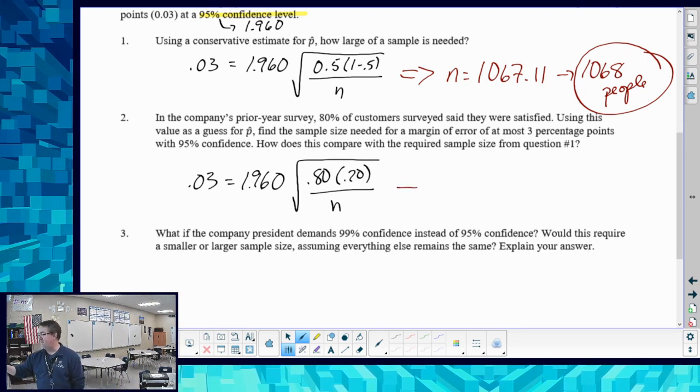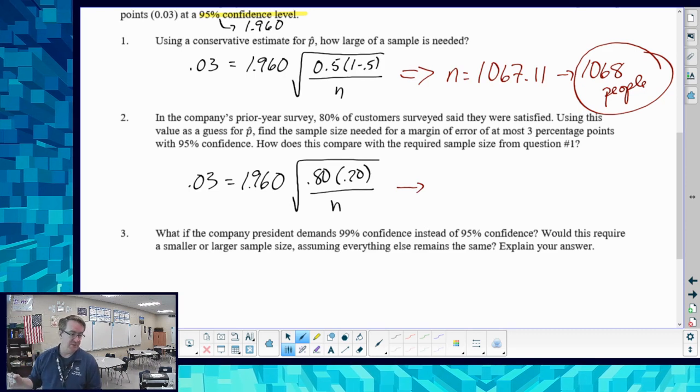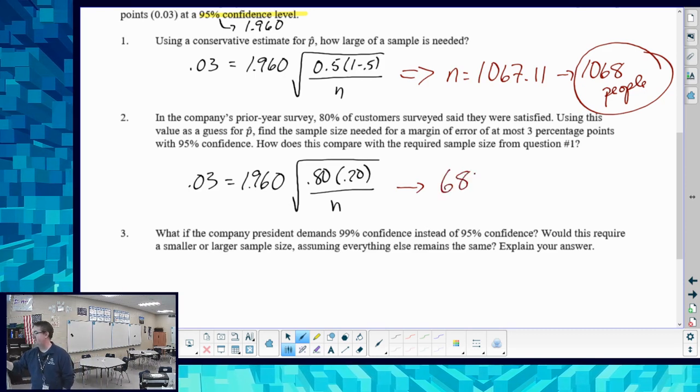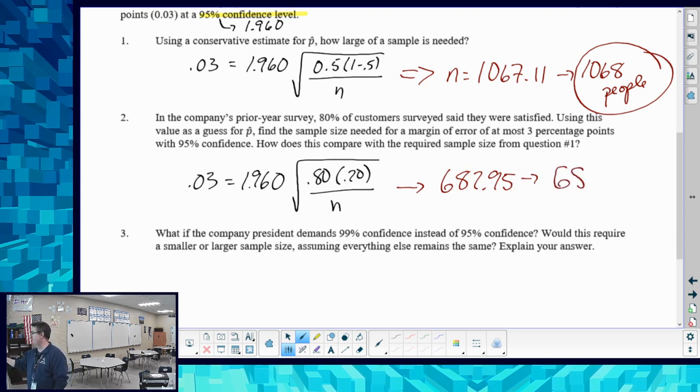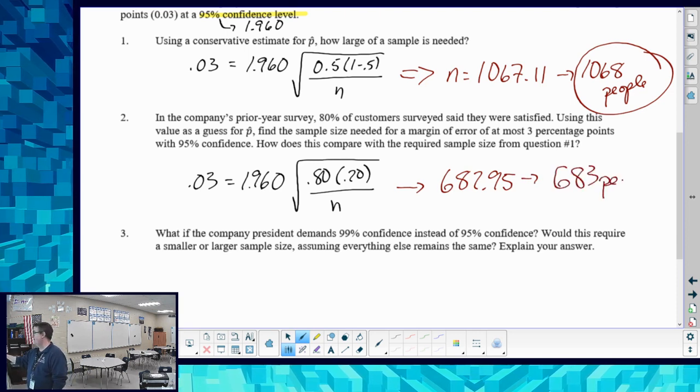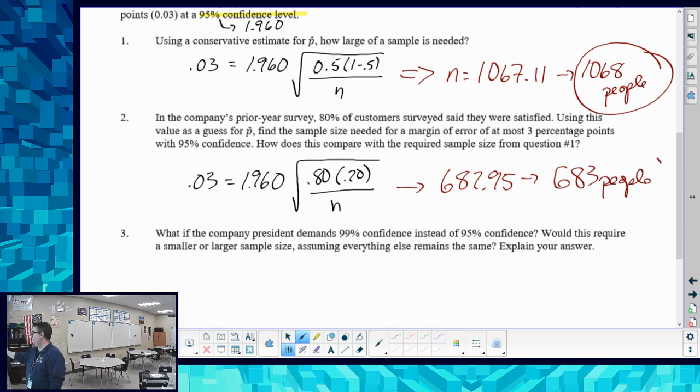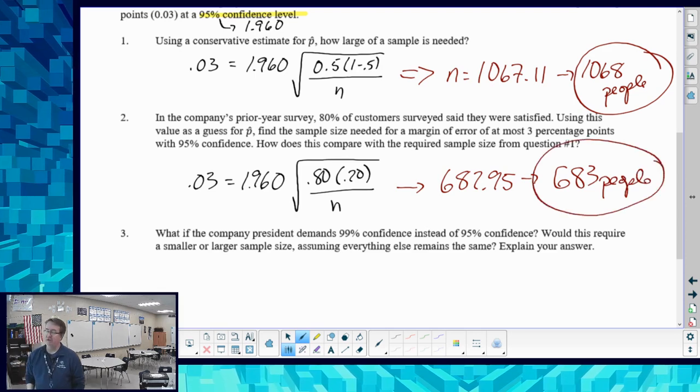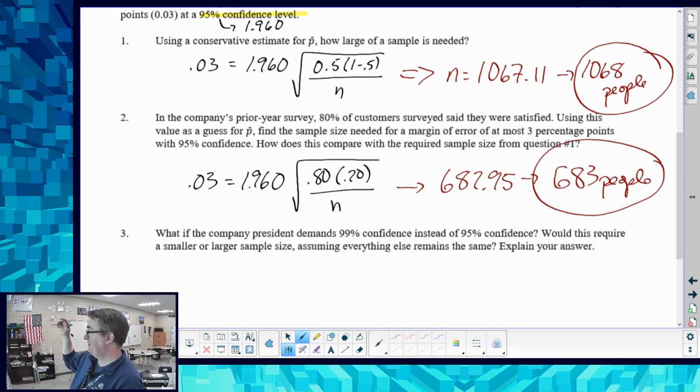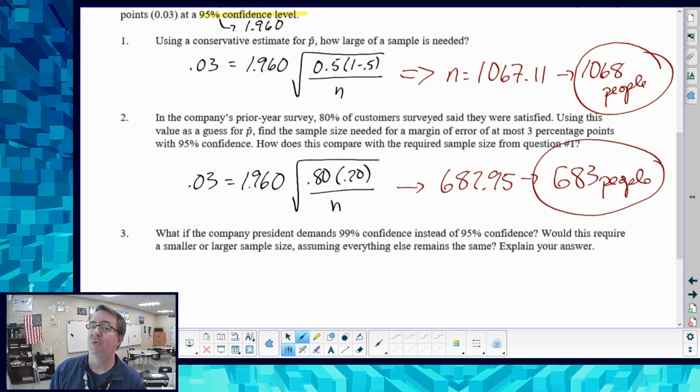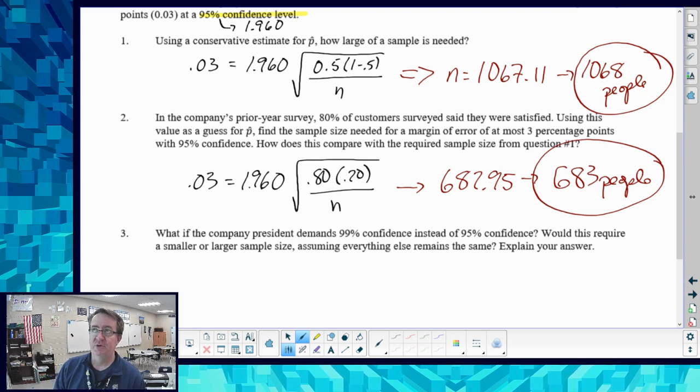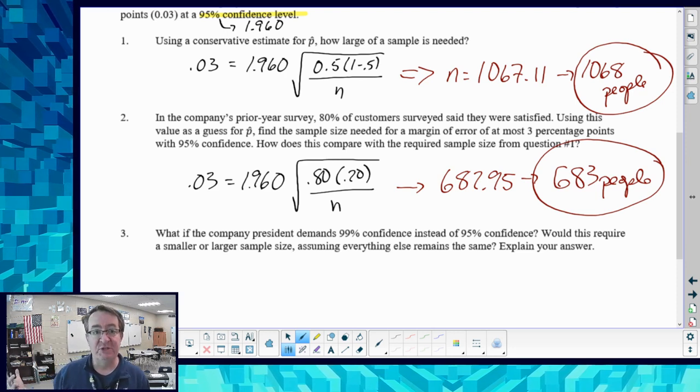Same process as we did before. And that is going to give you an n value of 682.95, which means that we're going to round that to 683 people. So just by changing it from 50 to 80%, we cut 40% of the people that we have to survey. You can see why finding that p hat is important, because that's going to save you time and money in terms of administering the survey.